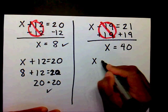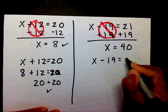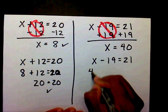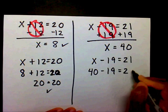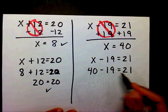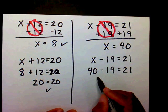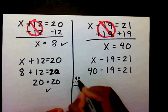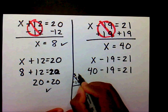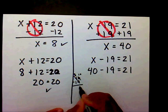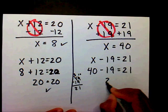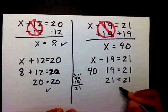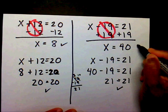So let's check it. x minus 19 equals 21. I'm going to substitute my 40 in for my x. 40 minus 19. Let me go over here and just subtract. I'm going through this process so you can see it. 40 minus 19 is 21. 21 on this side and you bring this 21 down. This is correct.